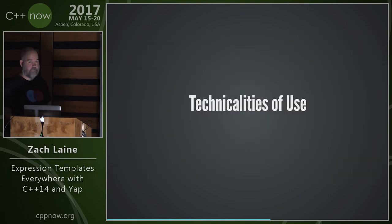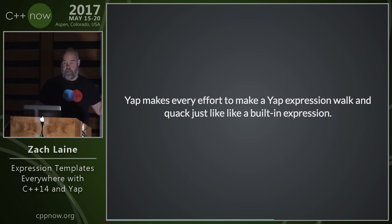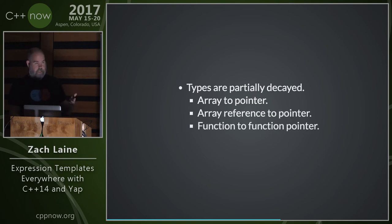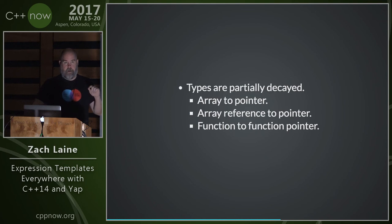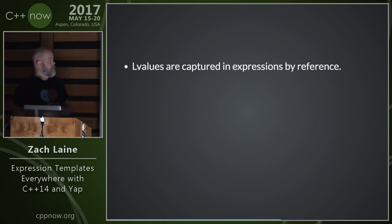Some technicalities of using YAP: types are partially decayed — array-to-pointer decay, function-to-pointer decay — matching C++ conventions. This is a departure from Boost.Proto, which would store an array of size N as the terminal type. YAP decays it to a pointer because storing the array intact breaks your mental model of what it means to pass an array into an expression.